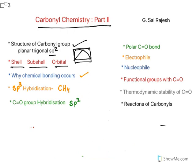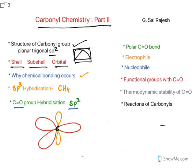Finally, I explained carbonyl group hybridization. In carbonyl groups, both carbon and oxygen undergo sp2 hybridization. In sp2 hybridized orbitals the bond angle is 120 degrees. Three hybrid orbitals are formed, and the remaining p orbital lies perpendicular to the plane. Oxygen also undergoes sp2 hybridization and similarly has three hybridized orbitals with one p orbital lying perpendicular to the plane.